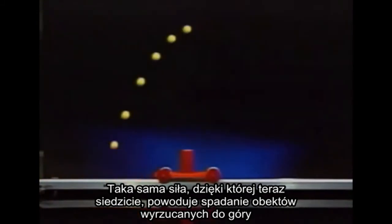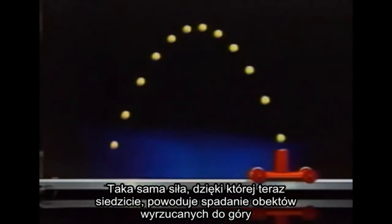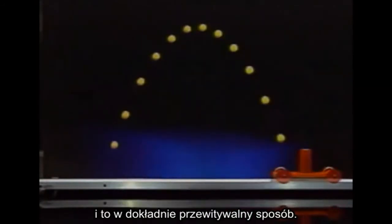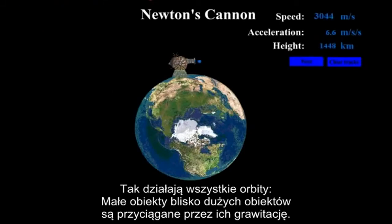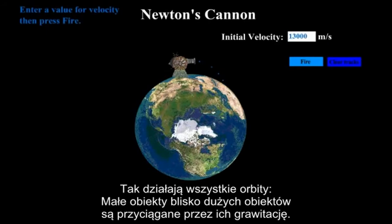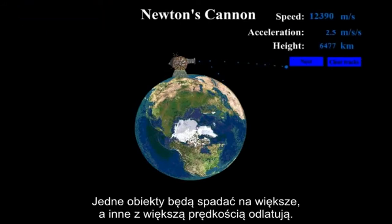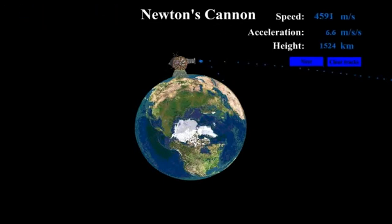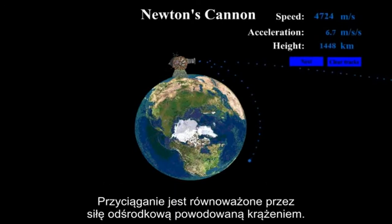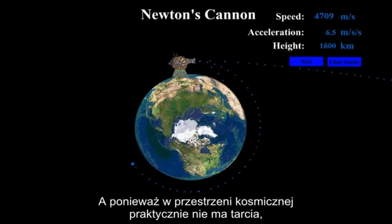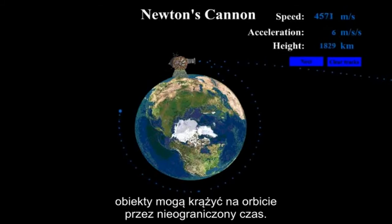There is no force or phenomenon that is more scientifically proven than gravity. You don't have to understand the physics of why it works to see that it does work the same everywhere in the universe. The same force holding you down right now causes all dropped objects to be pulled back to earth in a precisely predictable way, and it is the same force that holds the moon circling the earth. Smaller objects near bigger objects are pulled in by gravity. If they are going the right speed they will be pulled into an elliptical path around the object, counteracted by centrifugal force, and because there is virtually no friction in space, objects can remain in orbit indefinitely.